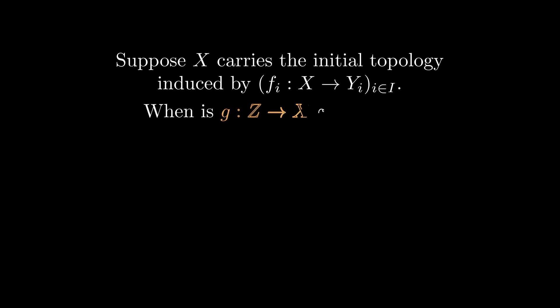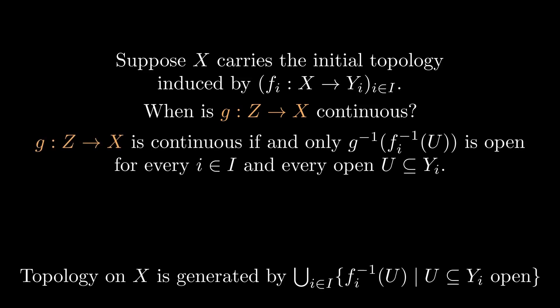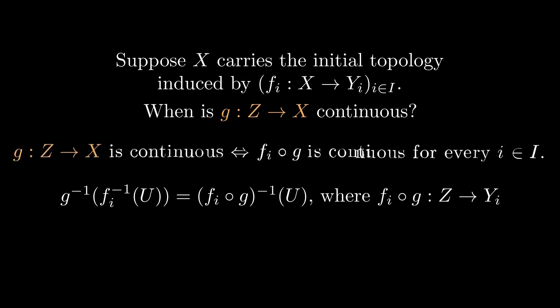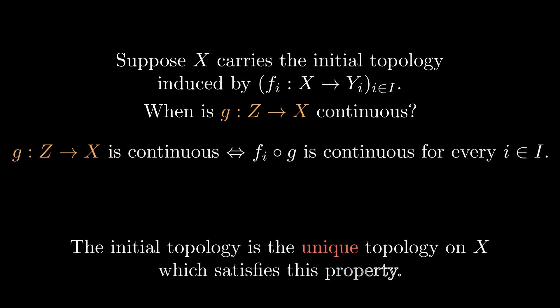Finally, let's study which maps into a space with the initial topology are continuous. The topology on x was generated by these sets. We only have to check whether the preimage of the generating open sets are open. The preimage of a preimage is a preimage of the composition. So we have that g is continuous if and only if all compositions are continuous. The initial topology is the only topology on x with this property.